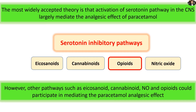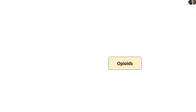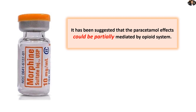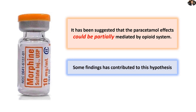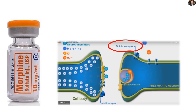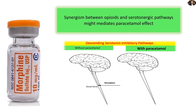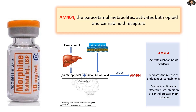And now we reach the last pathway in our lecture — the opioid pathway. It has been suggested that the paracetamol effects could be partially mediated by the opioid system. Some findings have contributed to this hypothesis: paracetamol could partially work through activation of mu and kappa opioid receptors; synergism between opioids and serotonergic pathways might mediate paracetamol effects; and AM404, the paracetamol metabolite, activates both opioid and cannabinoid receptors.